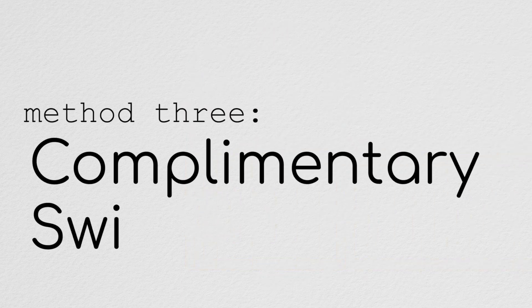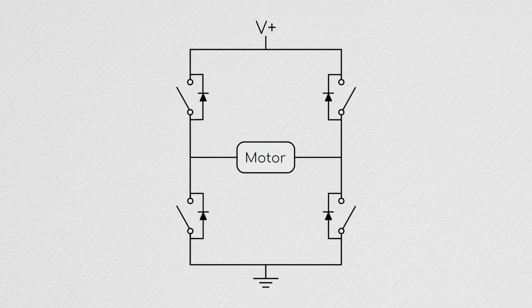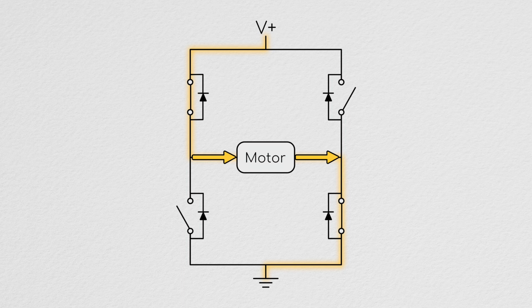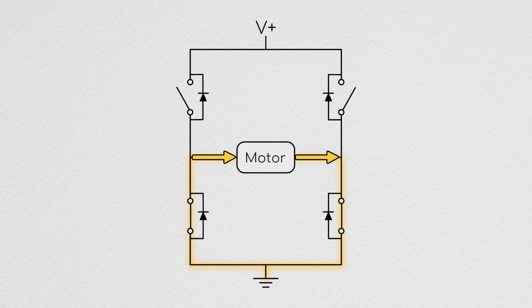Method three: complementary switching. Again, like the others, the forced phase has no surprise—a high left side and low right side MOSFET which are activated. Now however during the unforced phase, the high left side is opened and the low left side FET is closed. The current will flow up from ground through the FET on the left, through the motor, then back to ground via the FET on the right.